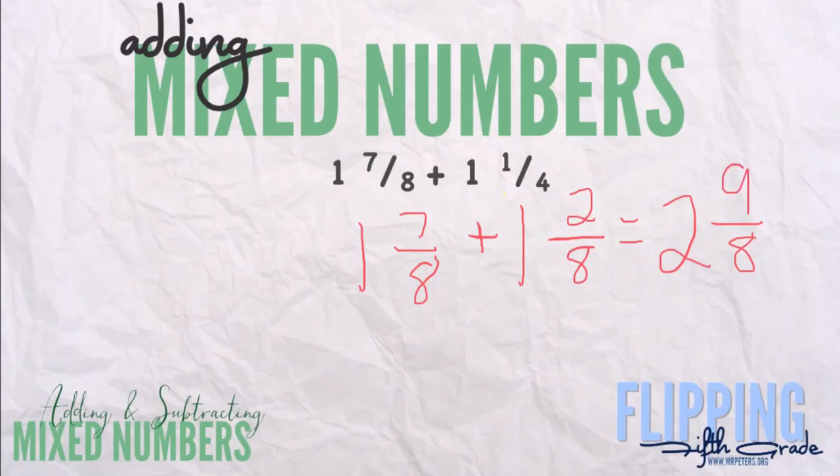Now, if the numerator is greater than the denominator, we have an improper fraction, an improper mixed number in this case. So we want to say, how many eights go into nine? The answer is one. So we're going to borrow eight from there, change that two to a three, change this to a one, because we took eight away to make a whole, because eight-eighths is one whole. So now our new answer is three and one-eighth.